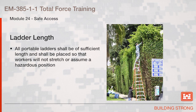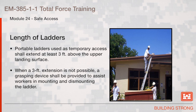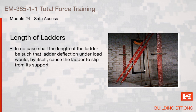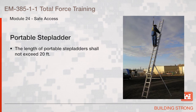The guard rail shall meet the strength requirements of Section 21.F.01. Swing gates are preferred over chain gates. All portable ladders shall be of sufficient length and placed so that workers will not stretch or assume a hazardous position. Portable ladders used as temporary access shall extend at least 3 feet above the upper landing surface. When a 3-foot extension is not possible, a grasping device shall be provided to assist workers in mounting and dismounting the ladder.